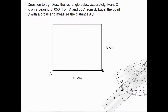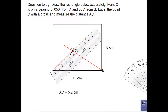Here's a question for you to try — please pause the video now and have a go. When you're ready for the answer, press play. Here is the answer: AC should be 5.2 centimetres, or thereabouts.